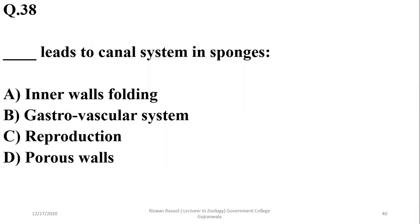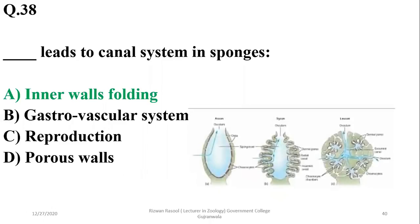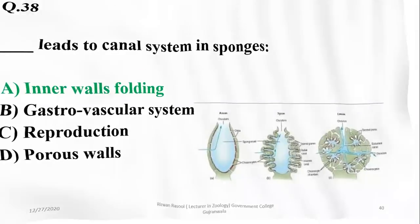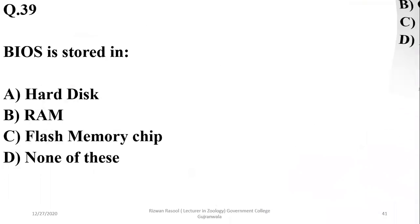Question 37: What leads to the canal system in sponges? It is the folding of inner walls. So alpha is the answer. Question 38: BIOS is stored in a flash memory chip — Charlie.